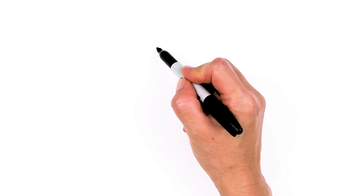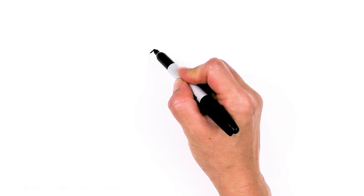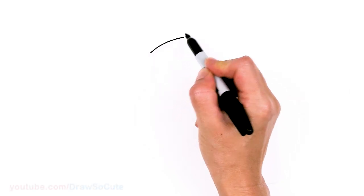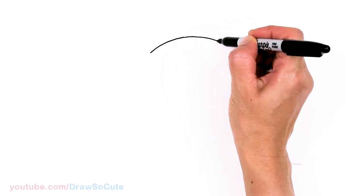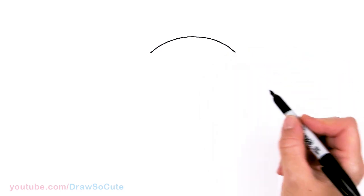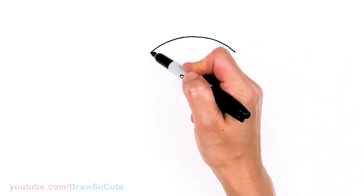To draw this cute dog, let's first start by drawing the Squishmallow shape. So I'm going to come right here and draw a big curve on the top. Bring it down just like the other side. And now that I have that, I'm going to start to bring it down.